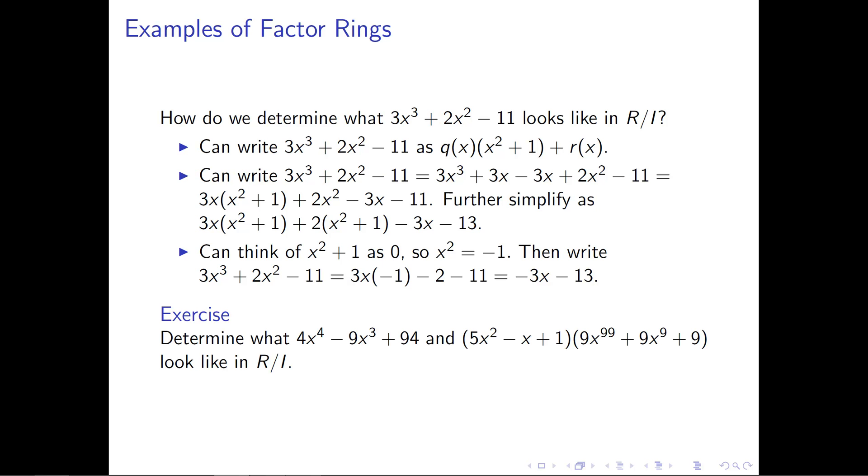Now it's your turn to get your hands dirty with this slightly harder example. Following or choosing any one of the methods that you'd like here, I'd like you to determine what 4x to the 4th minus 9x cubed plus 94 looks like in the factor ring r mod i. And then one step further, take a look at 5x squared minus x plus 1, that whole quantity multiplied by something huge, 9x to the 99th plus 9x to the 9th plus 9, and figure out what that product looks like inside r mod i. And for the last example, I'd really recommend reducing everything first, using one of the easier methods, and then doing your computations and your foiling after that.